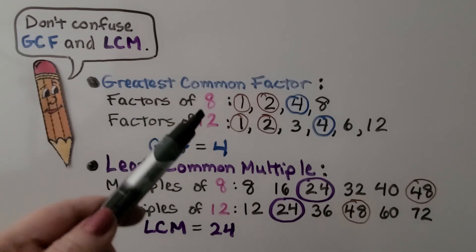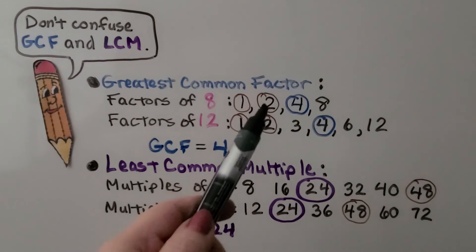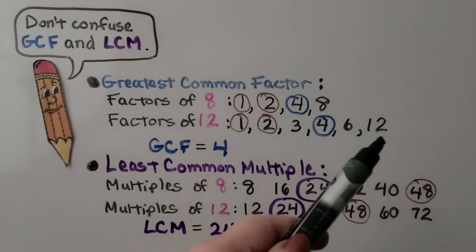The factors of 8 are 1, 2, 4, and 8. 1 times 8. 2 times 4. The factors of 12 are 1, 2, 3, 4, 6, and 12.